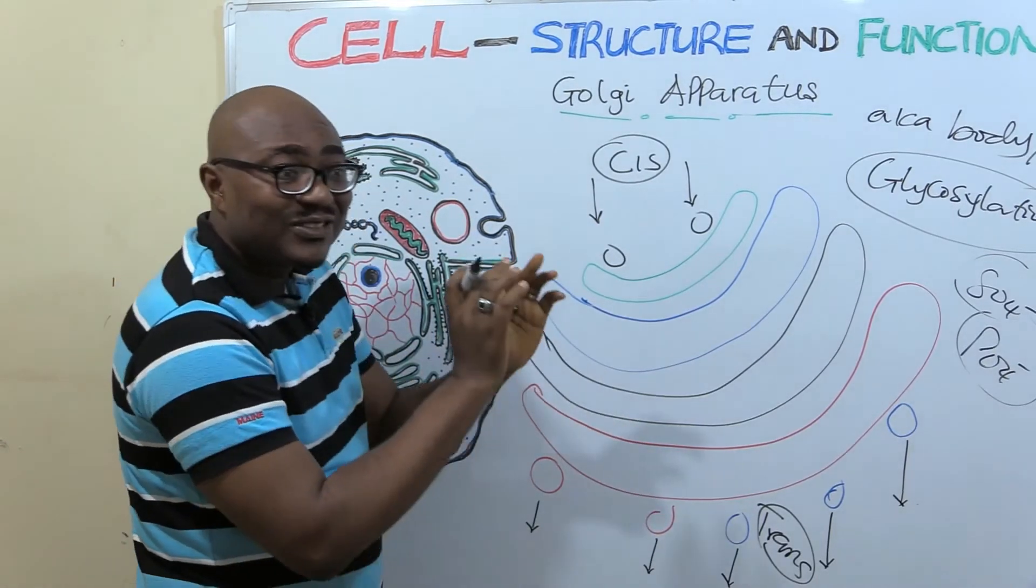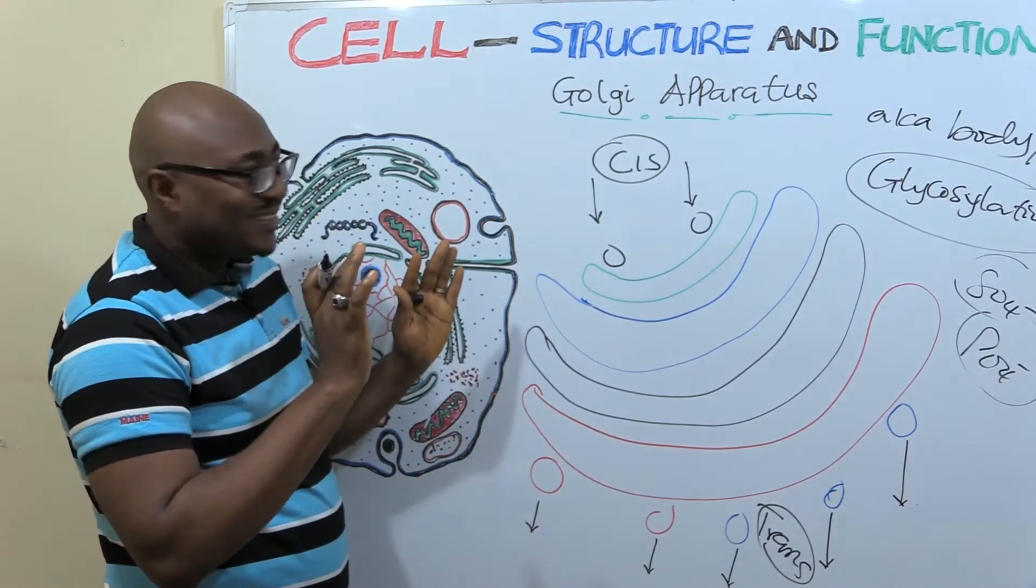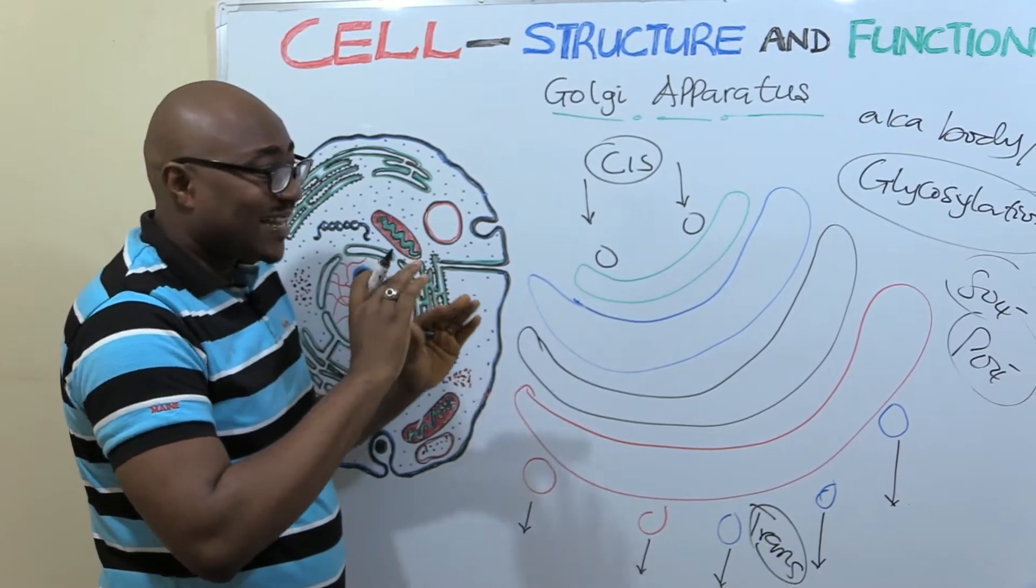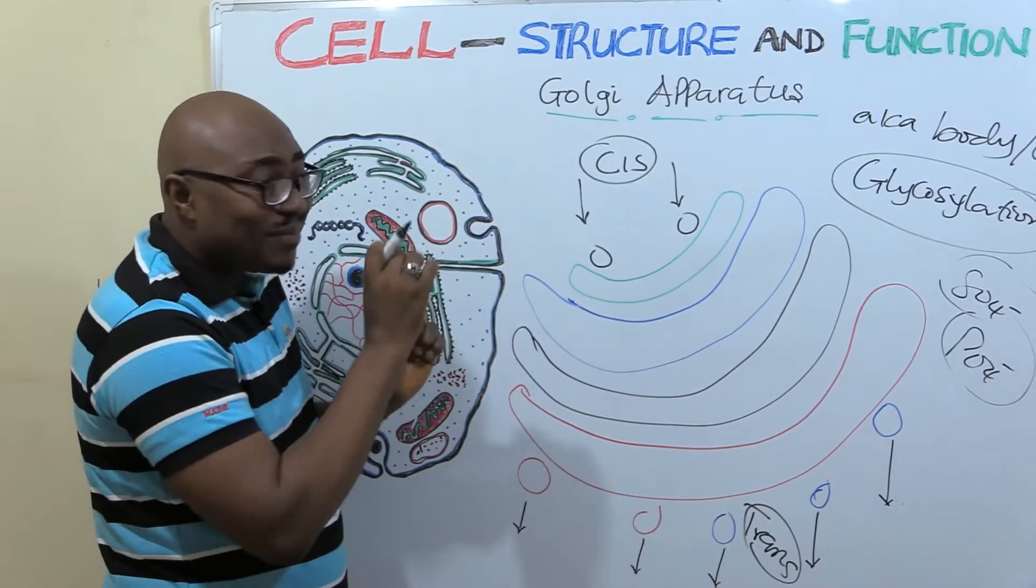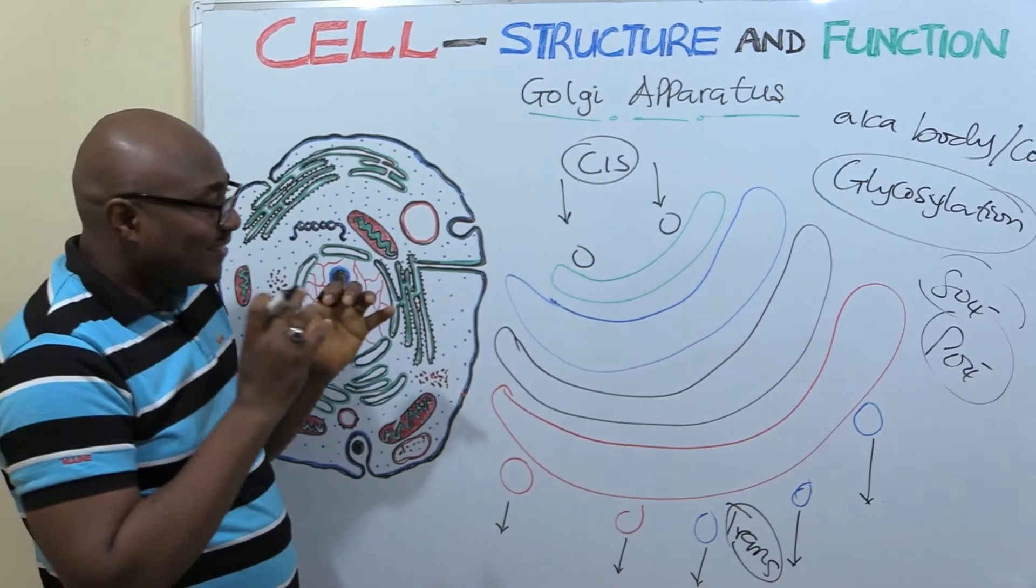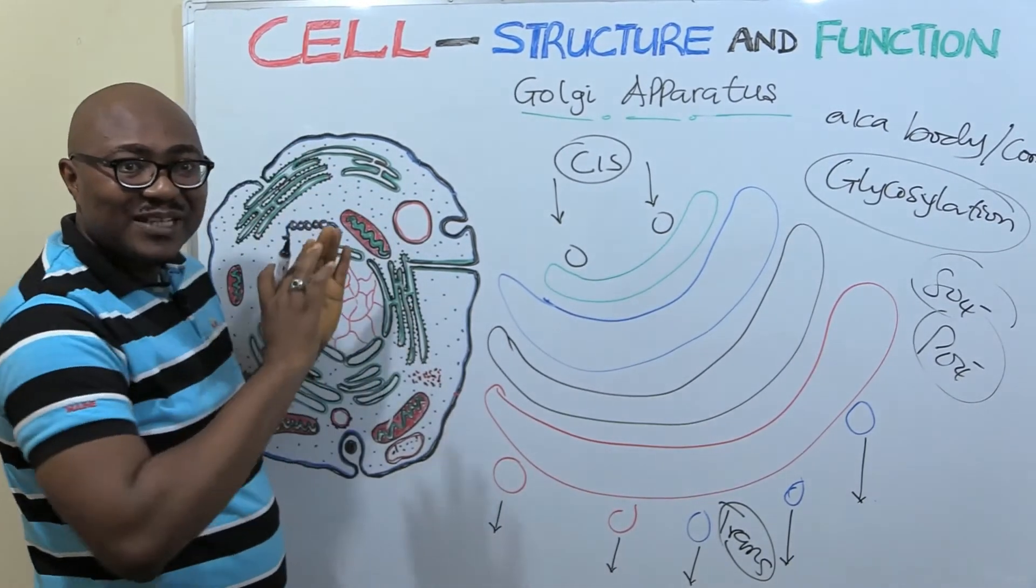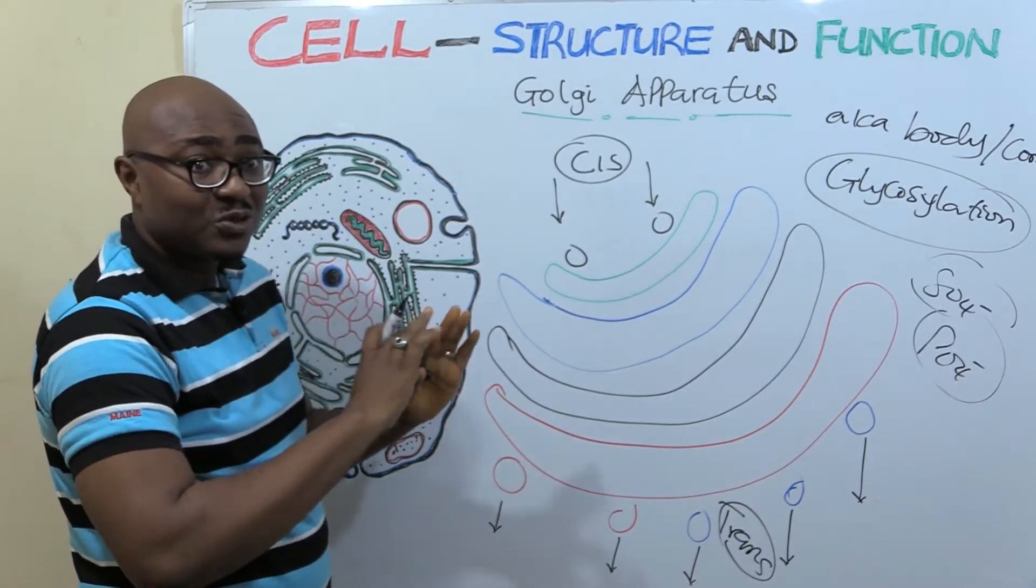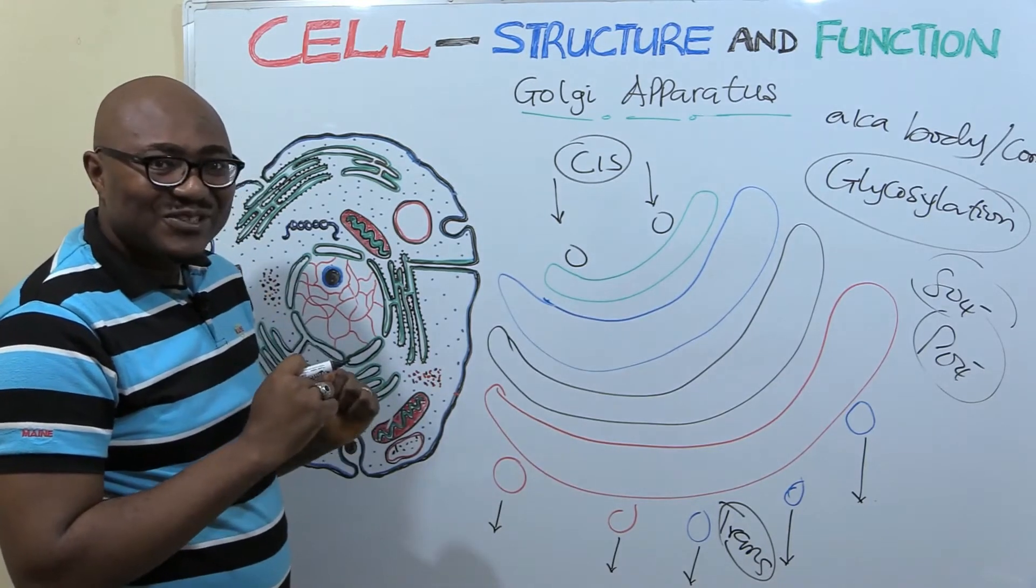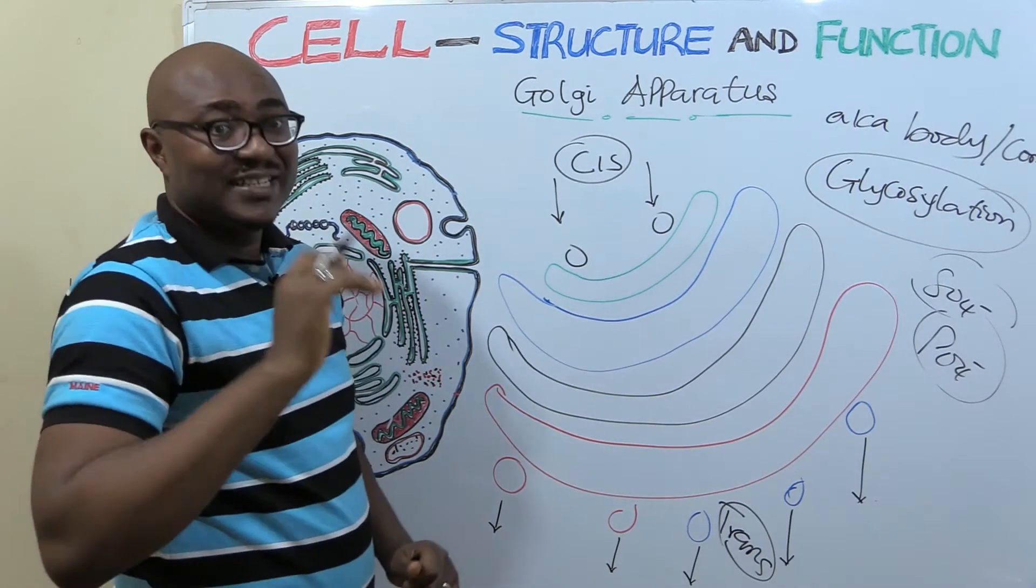Now I'm going to look at two other substances in conjunction with the Golgi apparatus that are very interesting. Some of them are made from the Golgi apparatus. Some of them are made from the endoplasmic reticulum. They perform also some very interesting functions. I'm going to be looking at that after this break.